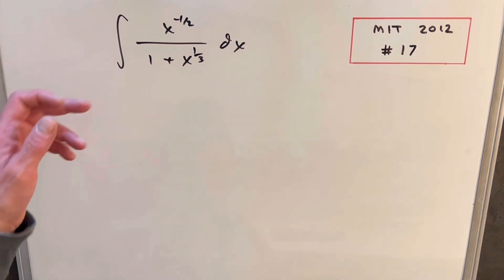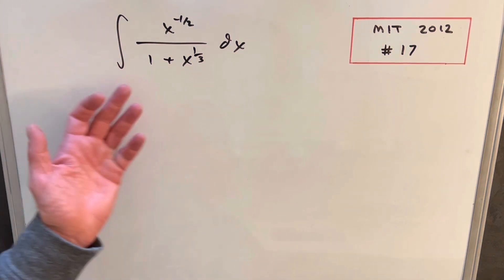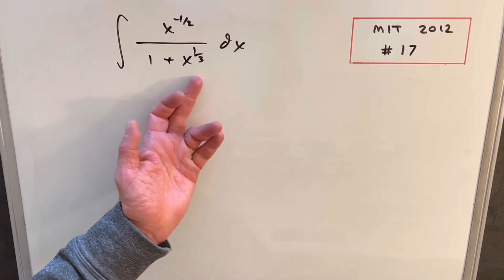First thing I usually look for in a problem like this, I'd like it if I could make a u substitution, particularly if the denominator, I could make the whole denominator my u.